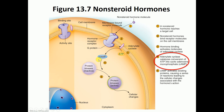Non-steroid hormones relay their message through a process known as signal transduction — transducing or carrying the message from the outside of the cell to the inside. This requires a second messenger, which in many cases is cAMP, made by the activation of adenylate cyclase enzyme that breaks down ATP into cAMP.